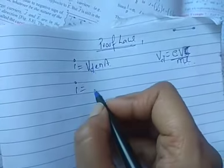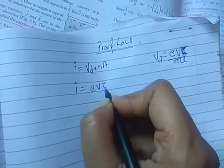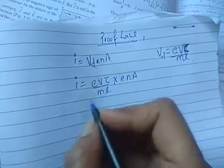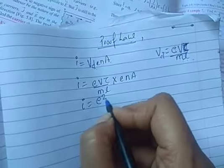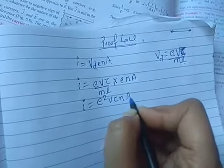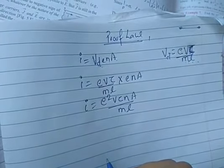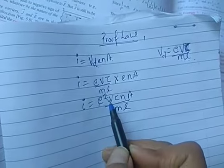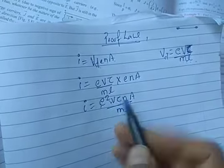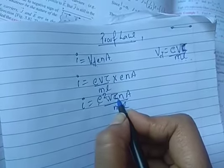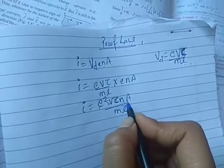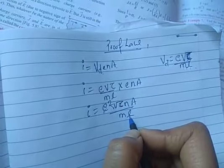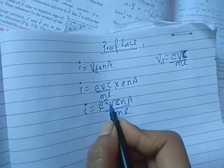Substituting the value of v_d into I = neAv_d, we get I = neA × (eVτ/mL). Cross-multiplying, this becomes I = (e²Vτna) / (mL), where e is the charge on the electron, V is the potential difference, τ is the relaxation time, n is the number of free electrons per unit volume, A is the area of cross-section, m is the mass of the electron, and L is the length of the conductor.